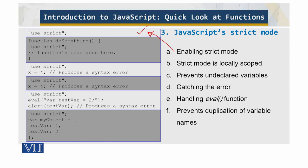The strict mode is locally scoped, meaning that it can be enabled globally by placing the use strict line at the beginning of the script, or it can be enabled only within a function by placing the line within the function, which is done over here.